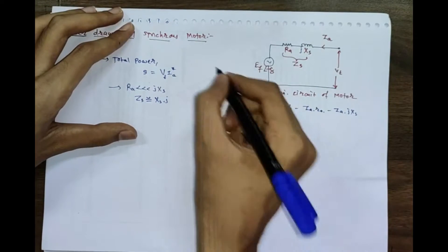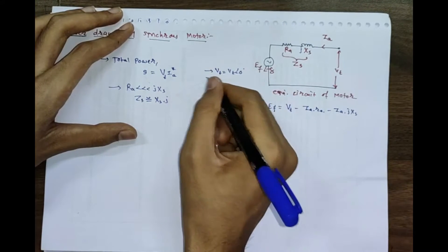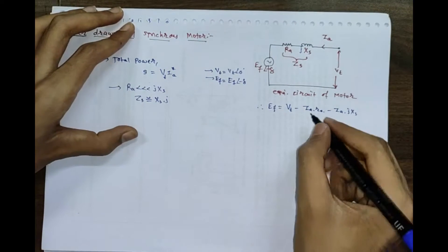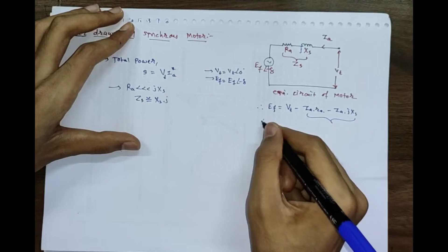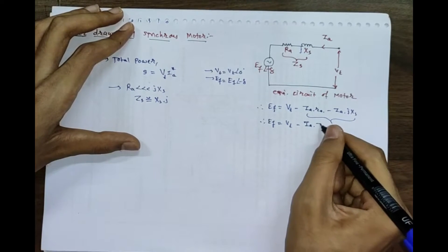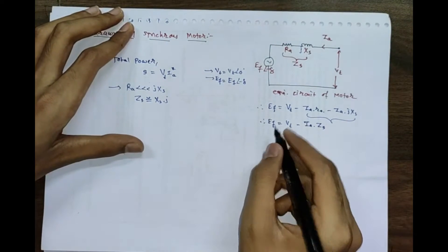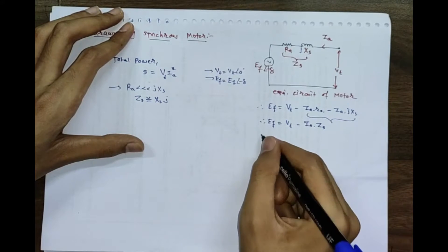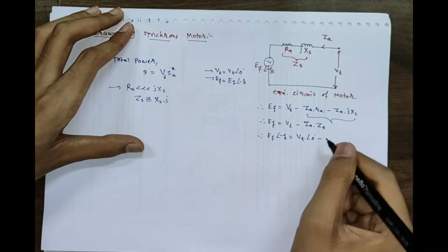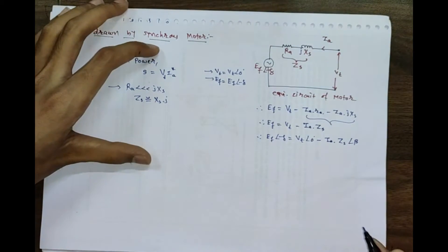So Vt is Vt at angle zero, and we consider Ef as Ef at angle minus delta. This equation can be written as Ef = Vt − Ia·Zs. In vector form: Ef at angle minus delta equals Vt at angle zero minus Ia·Zs at angle beta.